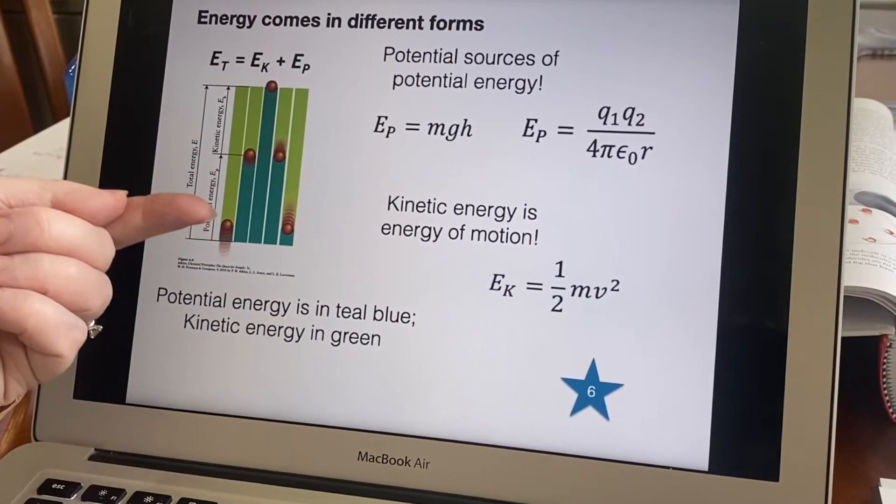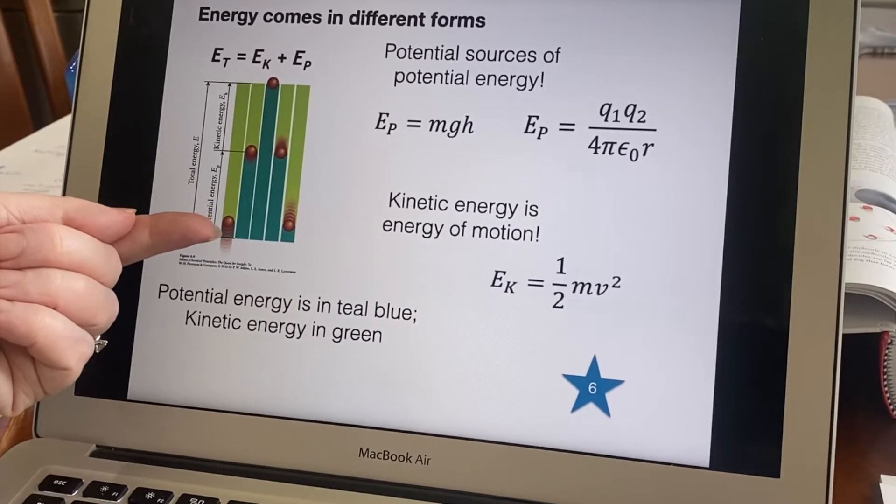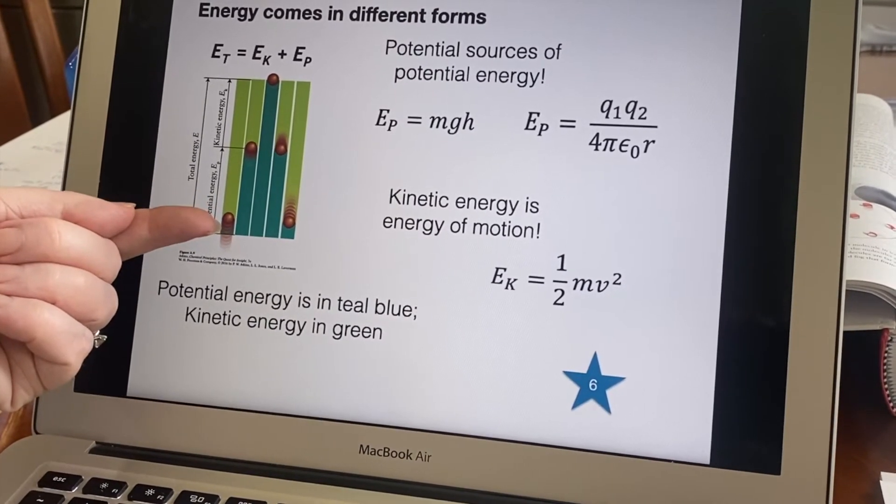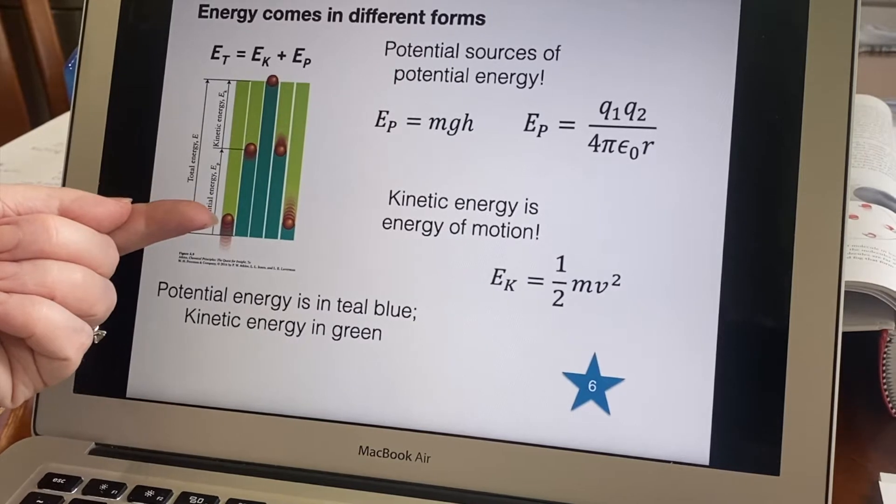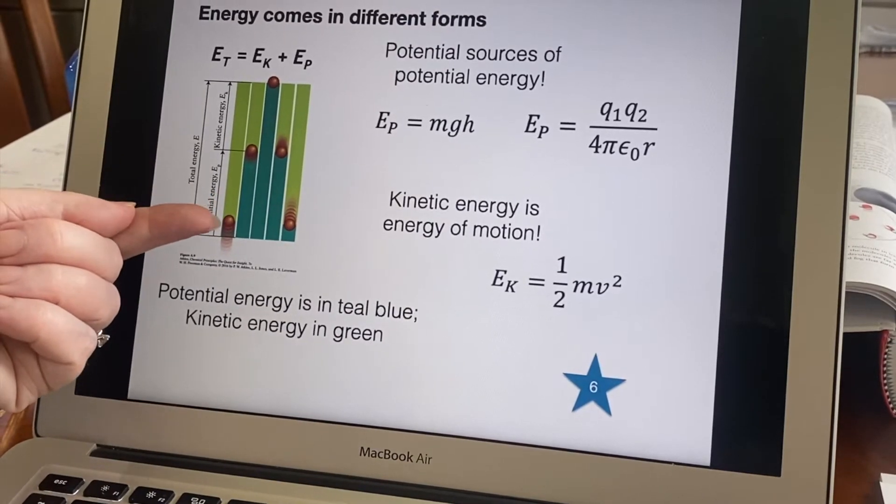When this ball is first thrown up it has a lot of speed which means it has a lot of kinetic energy, but it's not very far off the ground so it doesn't have much potential energy.